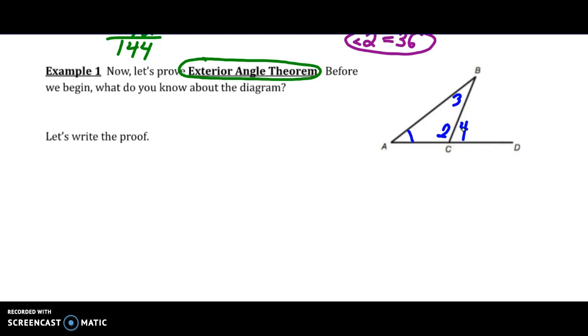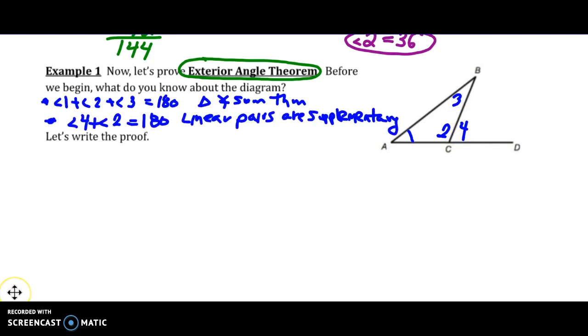Before we begin, I want you to pause the video and write what you know. I know the three angles in the triangle sum to 180 - that is Triangle Angle Sum Theorem. And I know that angle 4 plus angle 2 also sum to 180 because those linear pairs are supplementary.